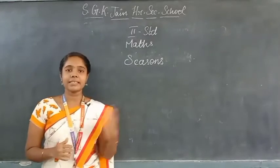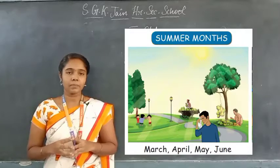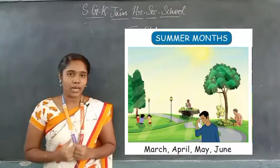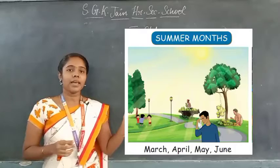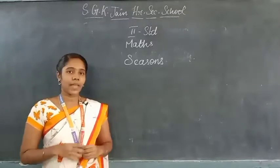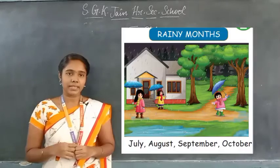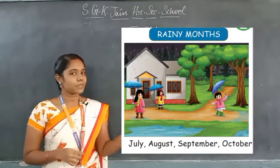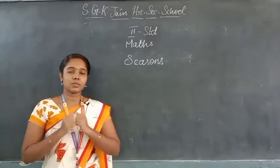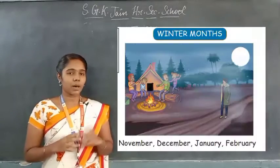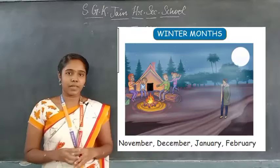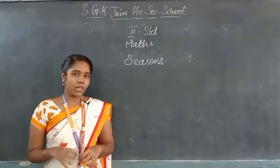Let us see which months each season comes in. Summer season comes in March, April, May, and June — these four months will be very hot and the sun will be very bright. Rainy season comes in July, August, September, and October. Winter months will be very cold: November, December, January, and February are the winter months.